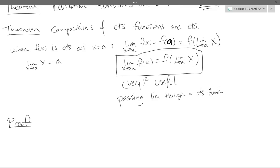We're going to prove why the composition of continuous functions is continuous. We use this property of passing a limit through a continuous function — I put it inside a box. It's very useful, not just in the proof we're about to do, but in general: you can pass a limit through a continuous function.